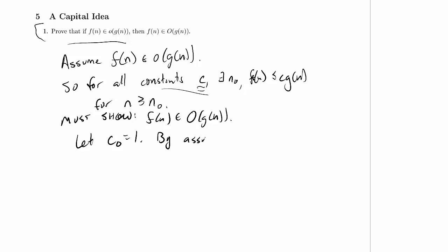By assumption, n0 for big O exists such that f(n) ≤ c_O·g(n), which is just g(n), for all n ≥ n0.